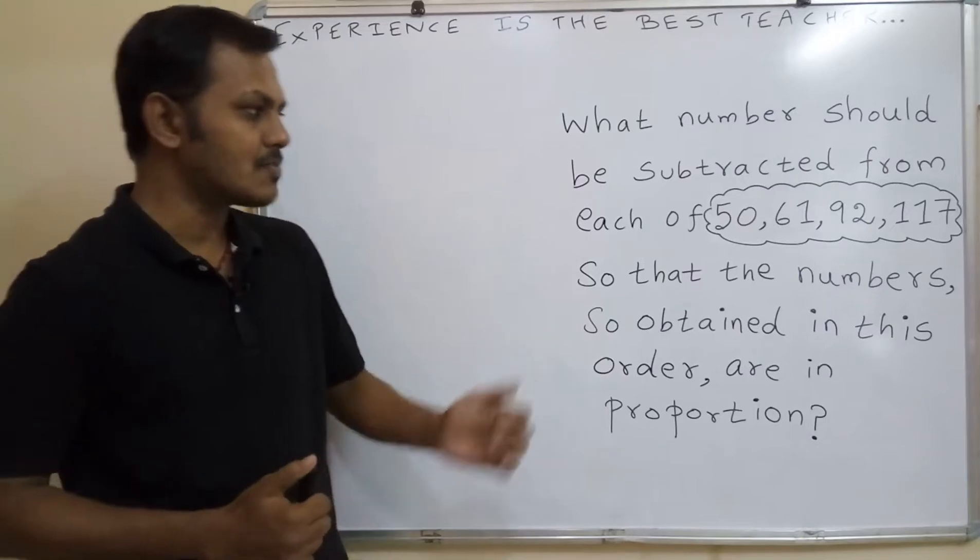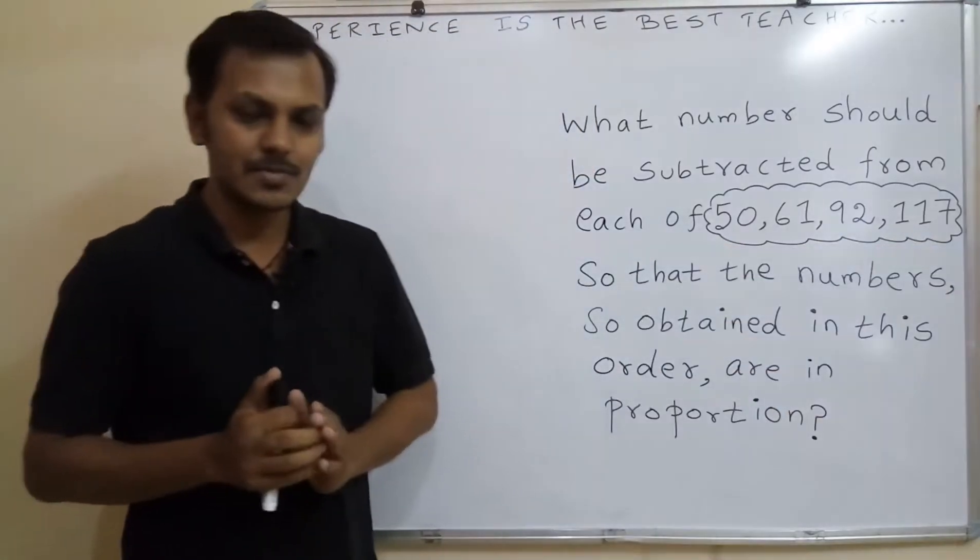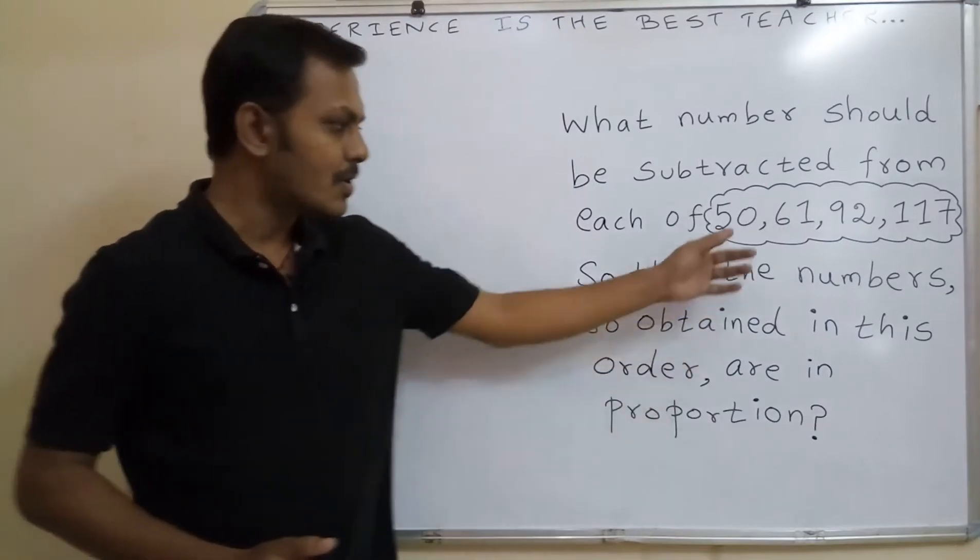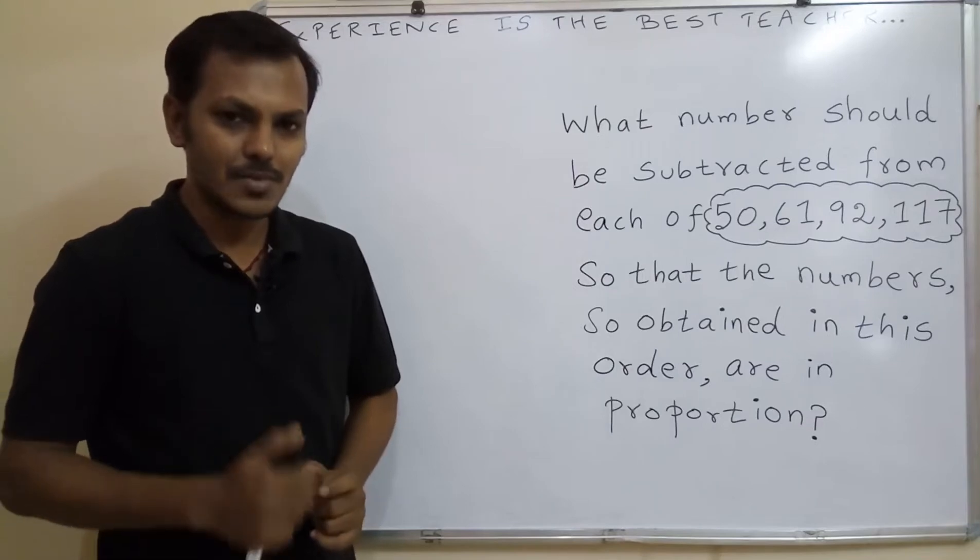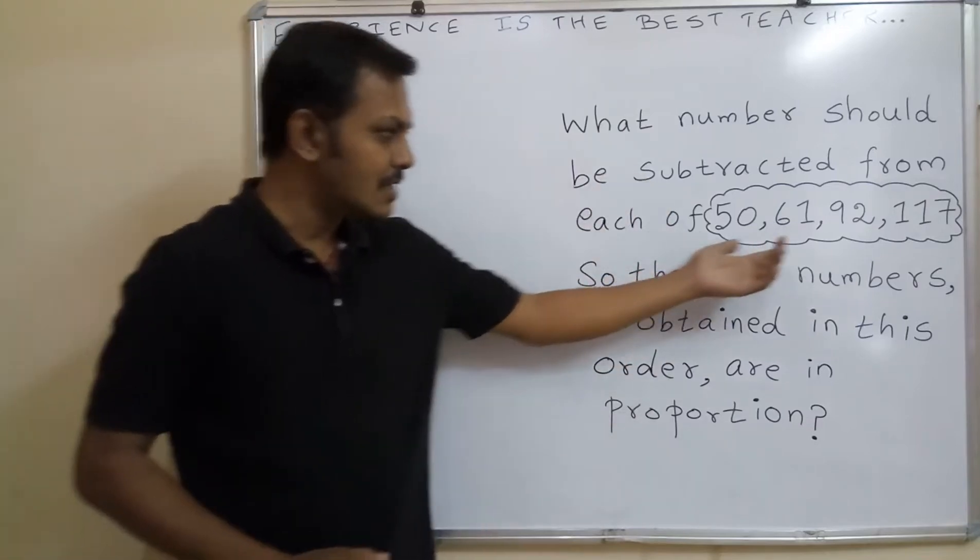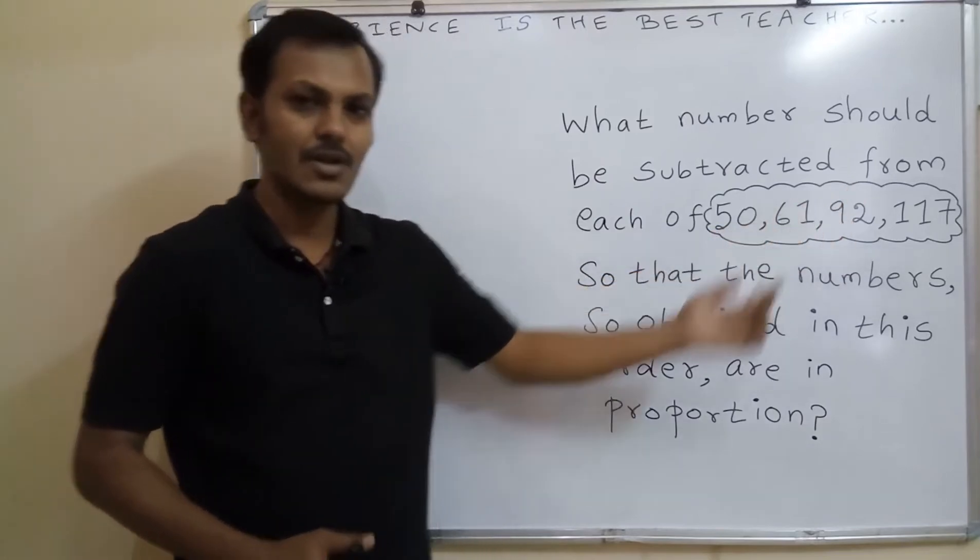So proportion means we have one small easy trick. Product of extremes - extremes means both ends - product of extremes is equal to product of means. Then we can say these numbers are in proportion but it is given these numbers, one number separated from each of this number, we will get the proportion.